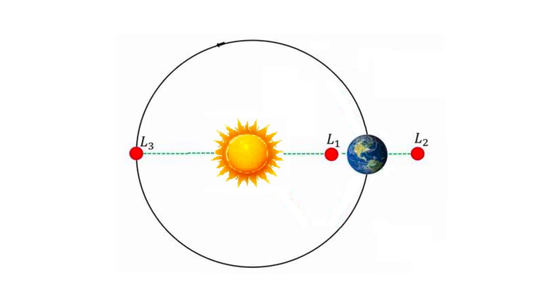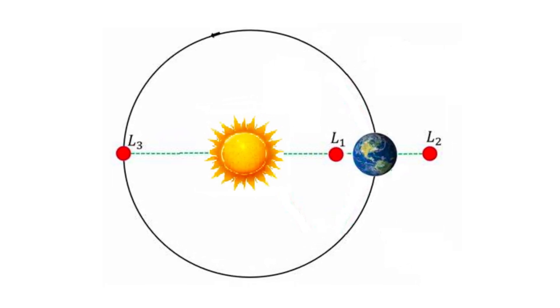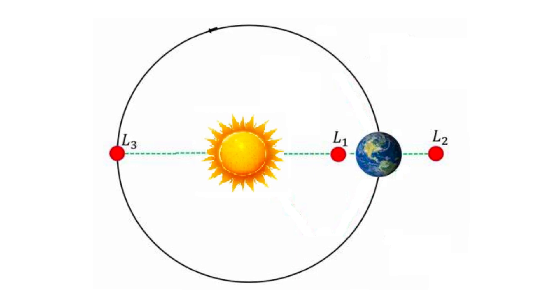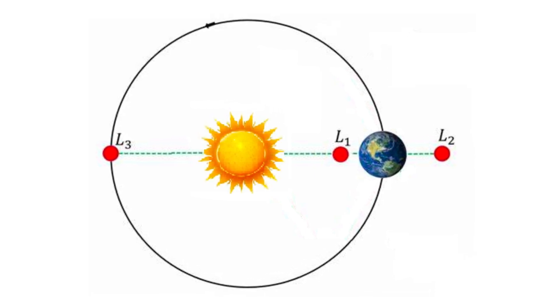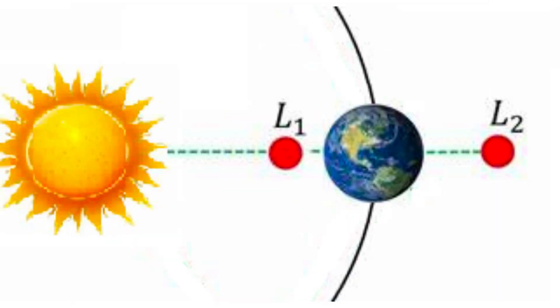The first three Lagrange points lie on the line connecting the massive bodies. Let's consider the Sun-Earth system and some small body for clarity. But in general, it can be any two massive bodies and one small one. L1 is located between the massive bodies where the attraction of one body is balanced by the attraction of the other and the centrifugal forces arising from the orbital motion.